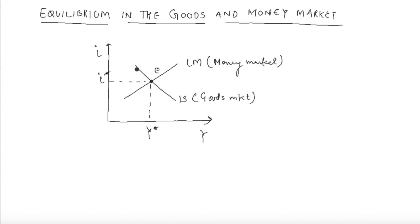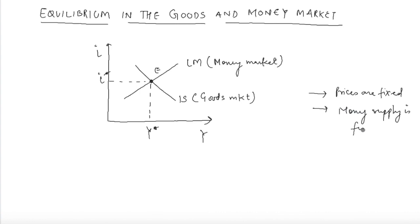In this model, prices are not changing - prices are fixed. We also said that money supply is fixed and there is no change in fiscal policy, meaning any kind of expenditure or tax from the government or the private sector is fixed. After knowing these three conditions, we can say that at point E, the goods and the money market will be at equilibrium.